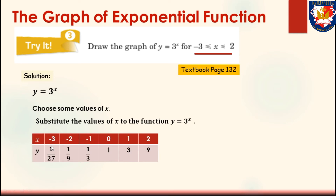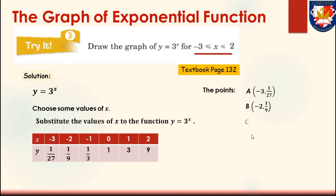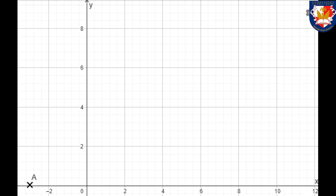For x equals negative 3, y equals 1 over 27. For x equals negative 2, y equals 1 over 9. For x equals negative 1, y equals 1 over 3, and so on. We obtain points A, B, C, D, E, F based on the table. Plot all the points on the Cartesian diagram and connect them smoothly. That is the curve we are looking for.